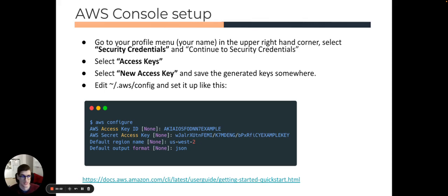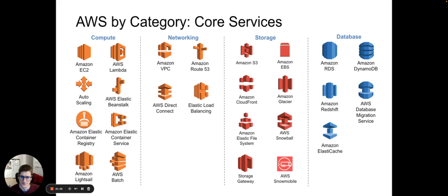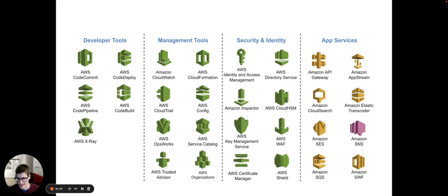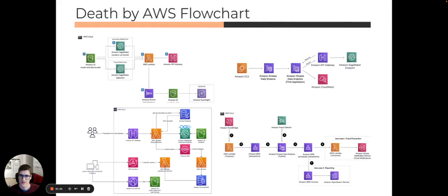Another idea is the AWS console setup — the way you interact with AWS from your terminal. If you want to set it up, you can go to Security Credentials and get the key. If you're working in a company environment, that comes really handy for testing and launching things quickly from your terminal without having to deploy manually on the web. There are many services by category — compute, networking, storage, database, analytics, enterprise, mobile, internet of things, developers, management like CloudWatch, security and identity, and app services.